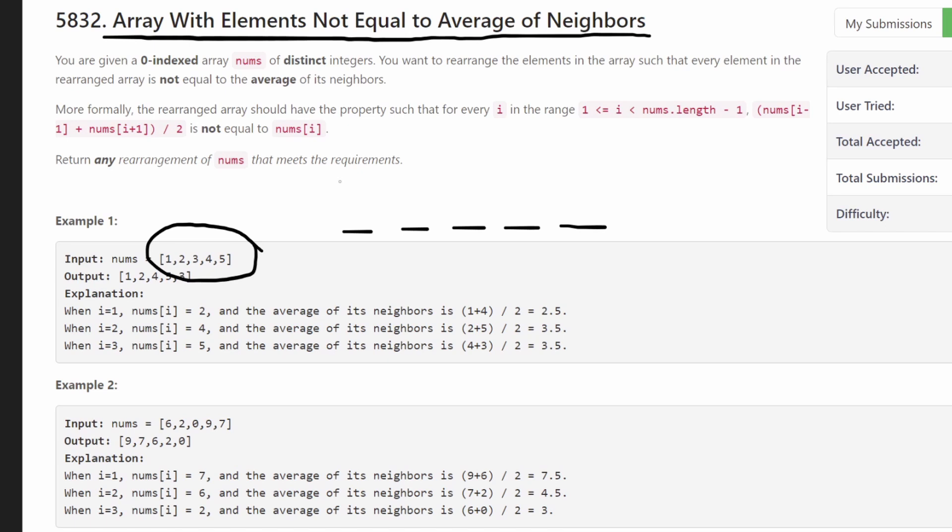Let me show you how it's really simple. We just take roughly the first half of the values in the input array, which in this case is one, two, three. We place them. We basically insert them into the array, but we're skipping an index each time. So we put a one here and instead of putting two in the next spot, we skip a spot and then put the two here. And then instead of putting three here, we skip a spot and then put three here, right? We put some spacing in between these values.